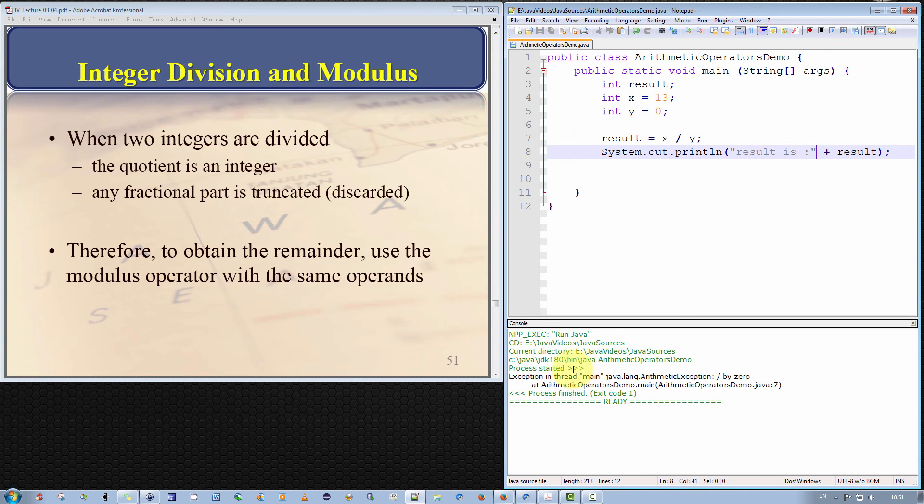Notice we get a Java runtime error. It says exception in tread main and it says java.lang.arithmetic exception division by 0. So it actually tells you. The error message is quite informative and it tells us that the error occurs in this file which is the name of my file here. Arithmetic operator demo.main inside the main method on line 7. So this is where the problem occurs. So the error messages can be quite informative as you can see here.